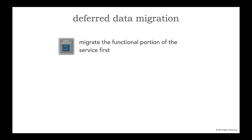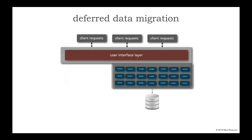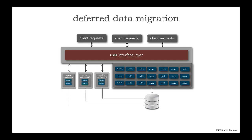So deferred data migration is a pattern that says this: first of all, migrate the functional portion of the service first into production. Learn about that service, and then over time, let the data portion of the bounded context of a service evolve over time. For example, this would be phase one. In production, we start moving functionality over and we've prepared the data to be moved, but we haven't pulled the trigger yet.